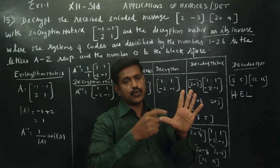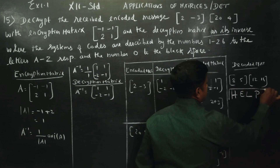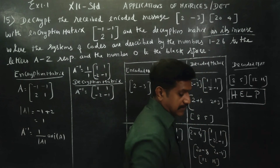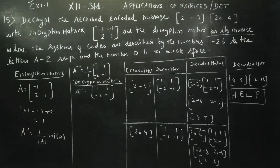Mapping the numbers to letters: 8 is H, 5 is E, 12 is L, 16 is P. So the decoded message is HELP. The original encoded message 2, minus 3 and others have been successfully decoded to spell out the secret message: HELP.